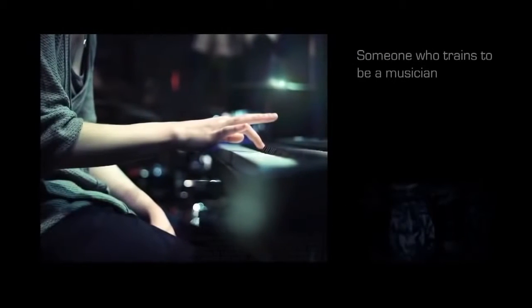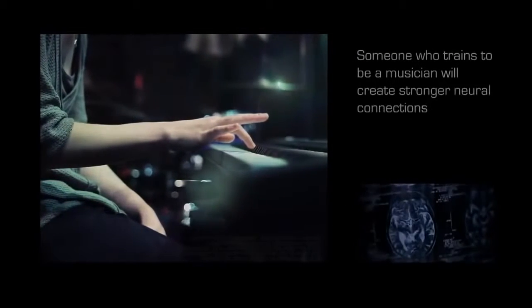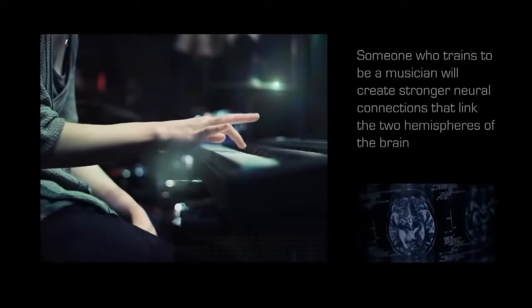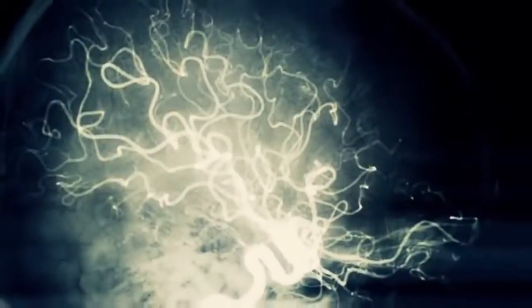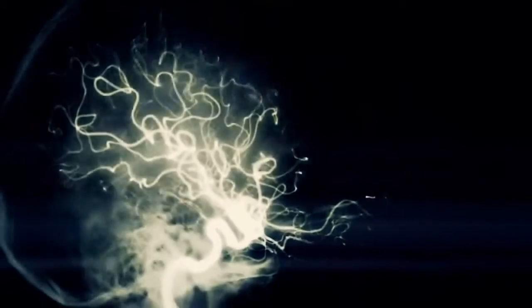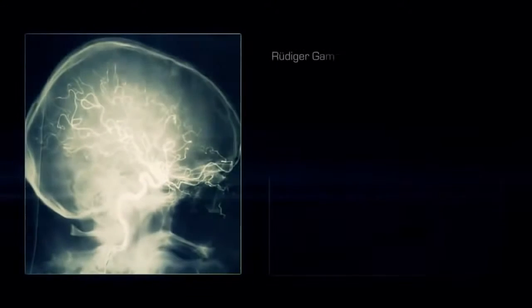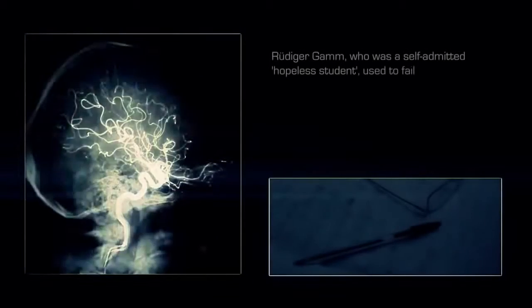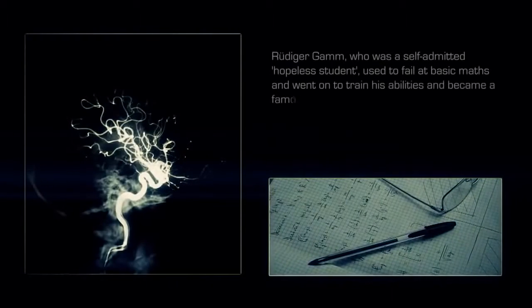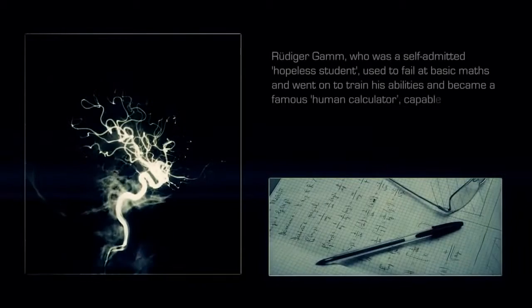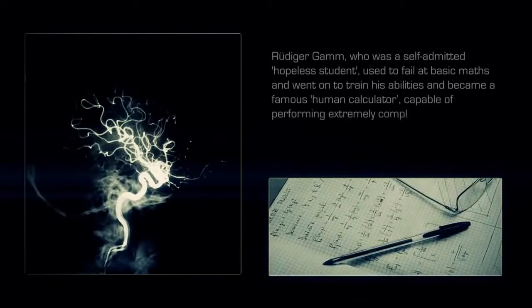Someone who trains to be a musician will create stronger neural connections that link the two hemispheres of the brain in order to be musically creative. Virtually any sort of talent or skill can be created through training. Rüdiger Gamm, who was a self-admitted hopeless student, used to fail at basic math and went on to train his abilities and became a famous human calculator, capable of performing extremely complex mathematics.